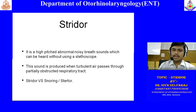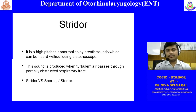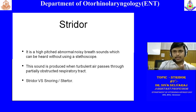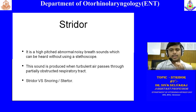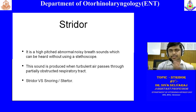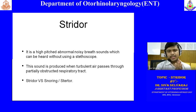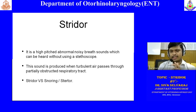When is stridor produced? Whenever air passes through a partially closed or closed vocal cord, when it just opens it will produce some sound. It should be a turbulent air passing through a tract which is partially obstructed. The obstruction can be anywhere in the wide airway.